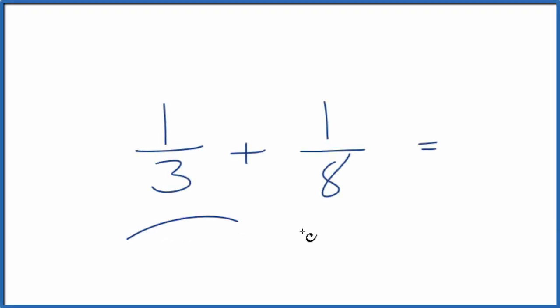Let's add the fractions one-third plus one-eighth, then I'll show you a quick way to check your work. So we need to get a common denominator to add these two fractions together. Three and eight, they're different, so that's not going to work. But here's what we can do.